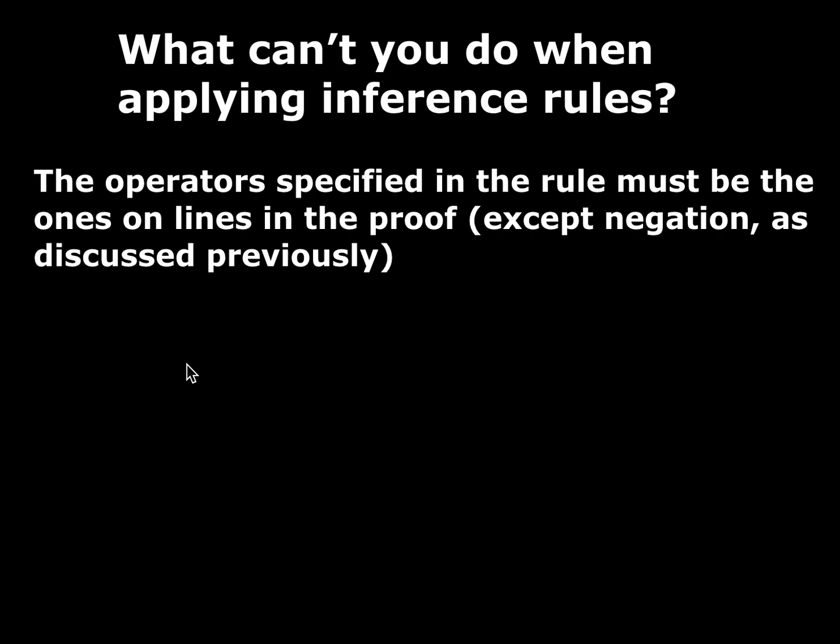Next: the operators that are specified in the rule have to be the operators that are on the lines in the proof — except negation, which I talked about in the first video. Go back and watch the beginning of video one for negation. Here's what this means.